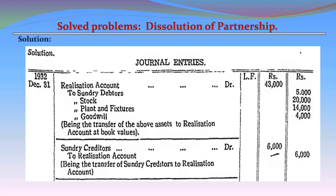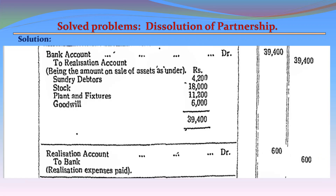Entry 2: Sundry Creditors Dr. 6,000 — To Realization Account 6,000. Being the transfer of Sundry Creditors to Realization Account. Entry 3: Bank Account Dr. 39,400 — To Realization Account 39,400. Being the amounts realized on sale of assets: Sundry Debtors 4,200; Stock 18,000; Plant and Fixtures 11,200; Goodwill 6,000; Total 39,400.